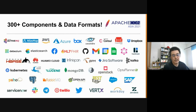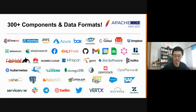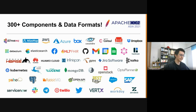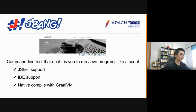Apache Camel has more than 300 components and data formats out of the box. What this means is that once you get used to Apache Camel, you have in your hands instant connectivity to most of the systems and services in the world.